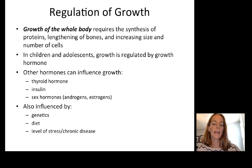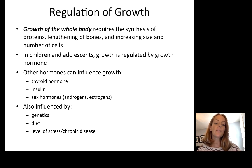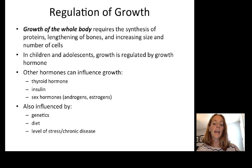When we talk about growth of the whole body, we're talking about growth spurts — in children and adolescents, these require the synthesis of a lot of proteins, lengthening of bones, and increasing the size and number of cells. Growth during these spurts is regulated primarily by growth hormone, but other hormones can influence growth: thyroid hormone, insulin, and sex hormones like androgens and estrogens. Growth is also influenced by genetics, diet, and the level of stress and chronic disease.